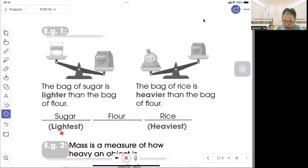So lighter will be sugar, followed by flour, and the heaviest is the rice.